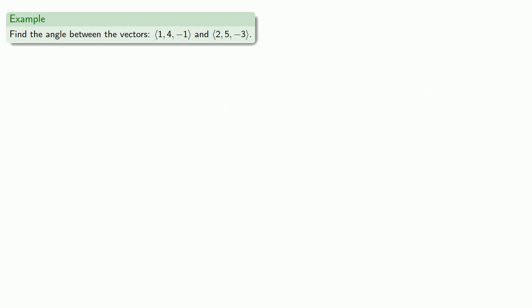What about vectors in three dimensions? Again, if we treat these as directions from the origin, they form two sides of a triangle. One side goes from the origin to (1,4,-1), and the length of that side is the magnitude of the vector.